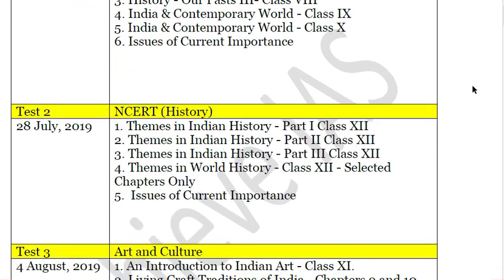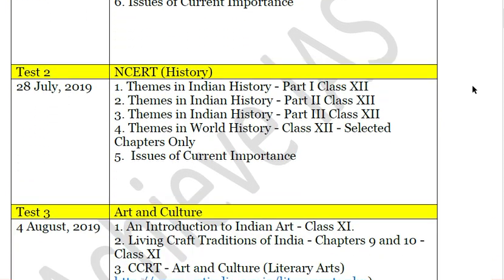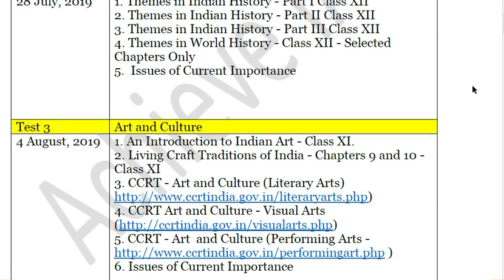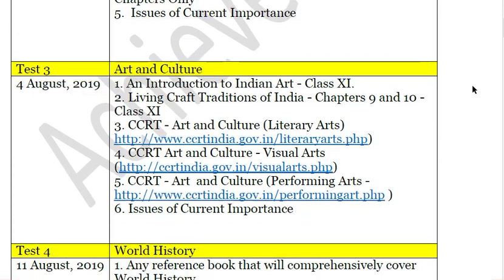Your second test is scheduled on 28 July, covering the remaining history NCERTs: Themes in Indian History Part 1, Part 2, and Part 3, and Themes in World History (Class 12). You are not required to read the complete Themes in World History book — only a few chapters relevant from the UPSC mains point of view are required to be read.